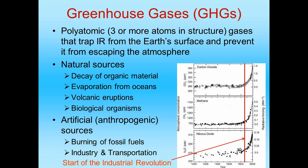Greenhouse gases, or GHGs, are what are called polyatomic — meaning they must have three or more atoms in their structure. These are the gases trapping that infrared radiation from the earth's surface. There are natural sources and anthropogenic sources of greenhouse gases. Natural sources include the decay of organic material releasing CO2 and CH4 methane, evaporation from oceans releasing H2O, volcanic eruptions putting SO2, CH4, and CO2 into the atmosphere, and cellular respiration — we breathe in O2 and breathe off CO2.